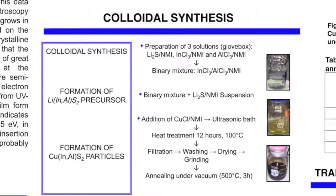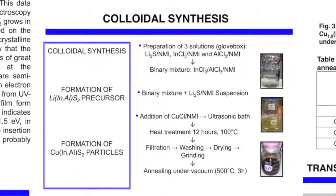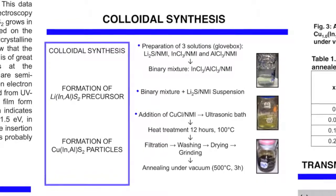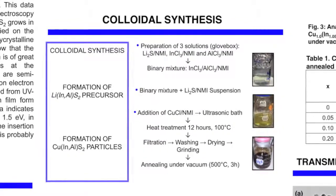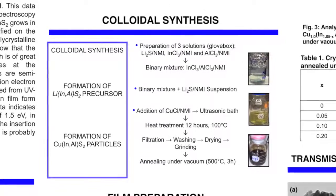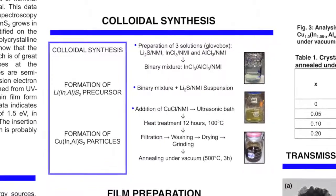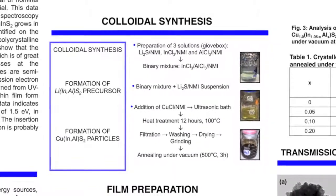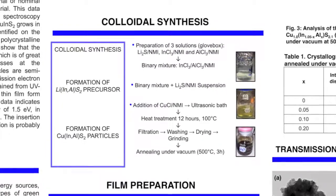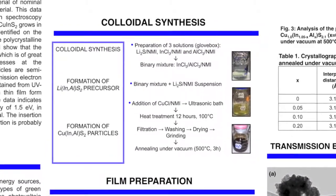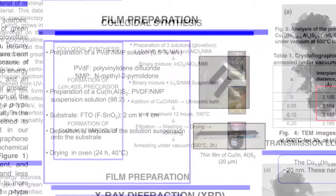So here the synthesis is really simple in a basic order, in the precise order we add the copper, indium, aluminum and sulfur and then we make a heating treatment. We wash, we anneal at 500 degrees for three hours and then we prepare the film.